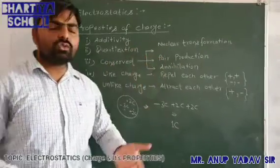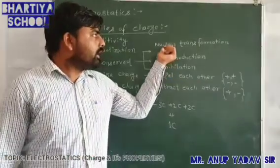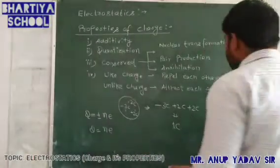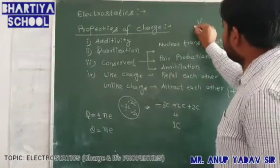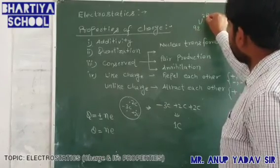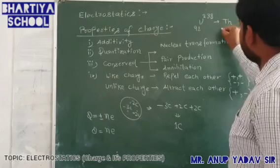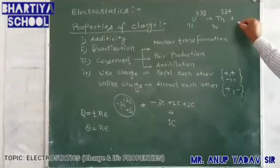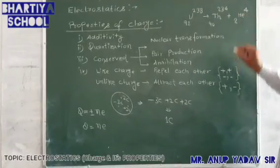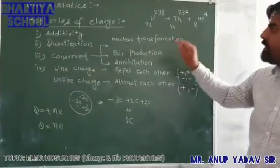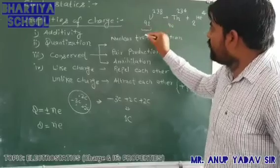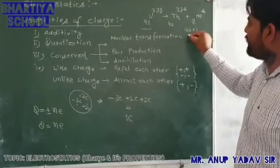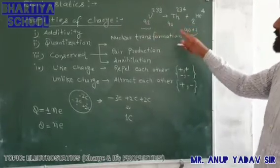Now, conservation of charge. We can show this through nuclear transformation. For example, Uranium-238 (atomic number 92) when it dissociates gives Thorium-234 (atomic number 90) plus an alpha particle (atomic number 2). Before dissociation, the charge is 92; after dissociation it is 90 + 2 = 92. The charge is always conserved.